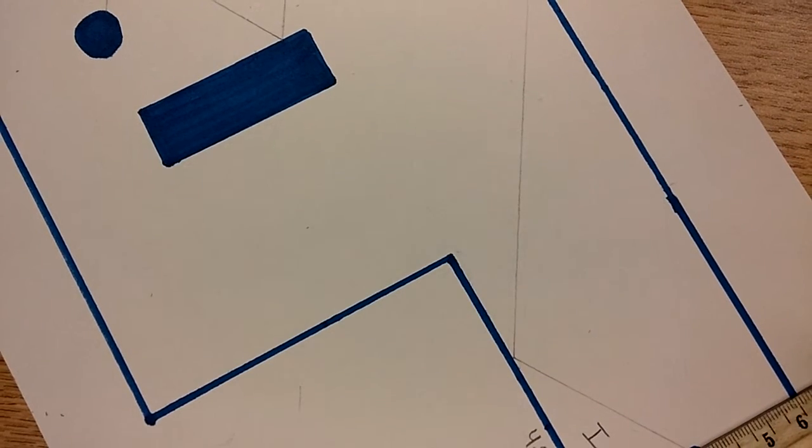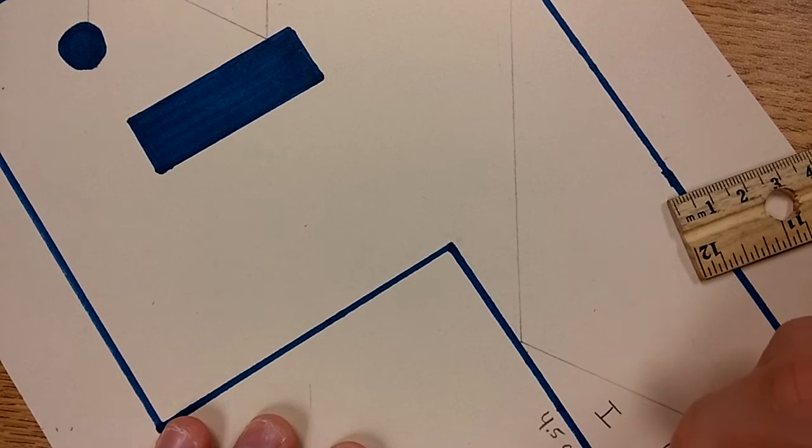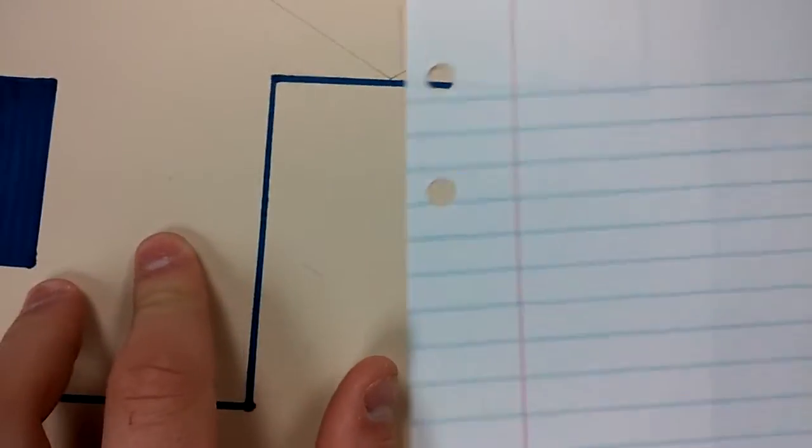And measure this. Looks like 3.85. So we just measured the two legs in order to find the hypotenuse.